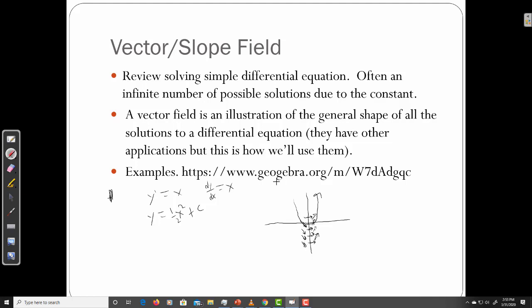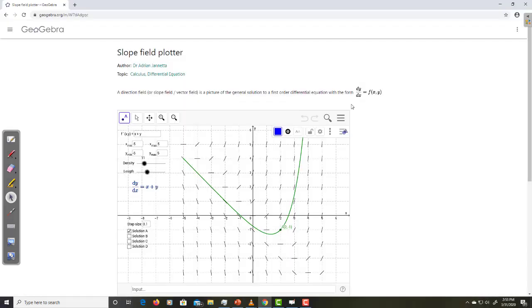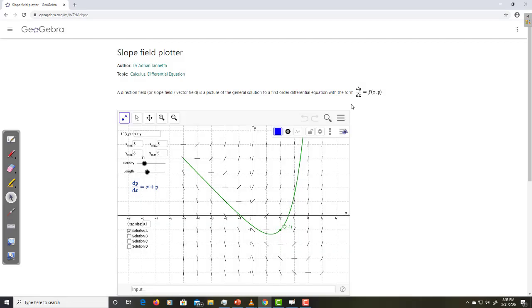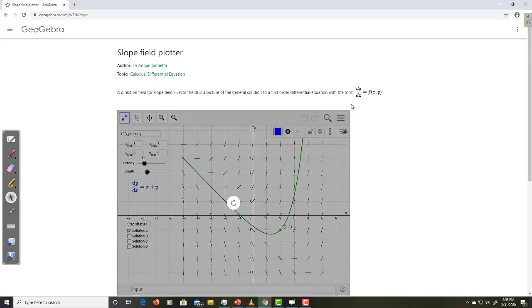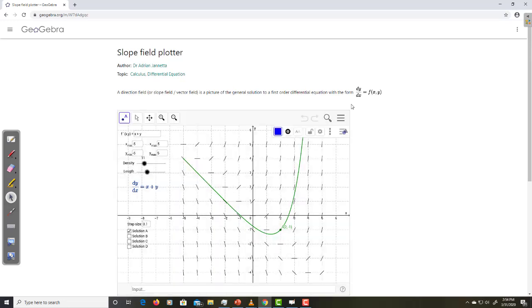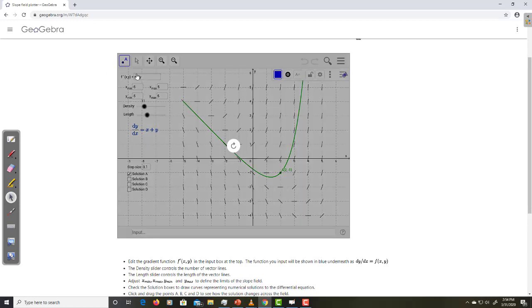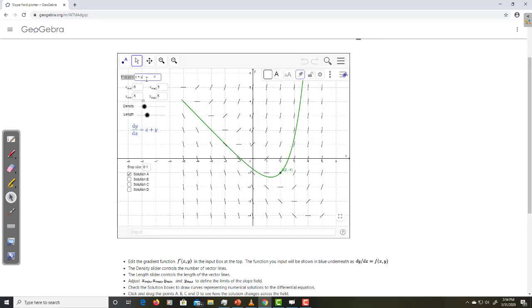So let's go to this website. I already brought it up. You can do vectors in a variety of different mathematical applications, but I found this nice GeoGebra app from Dr. Adrian Janetta. And it lets you set pretty self-explanatory settings. You can set what your differential equation is. So let's go ahead and graph f prime xy equal x. And let's go negative five to five.